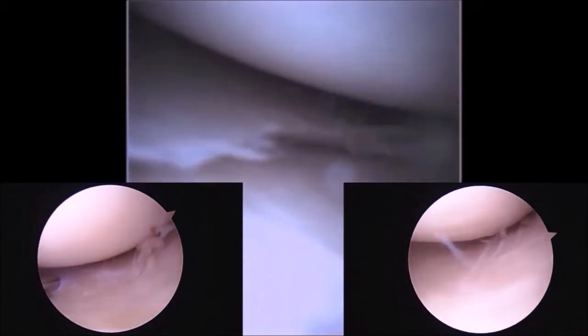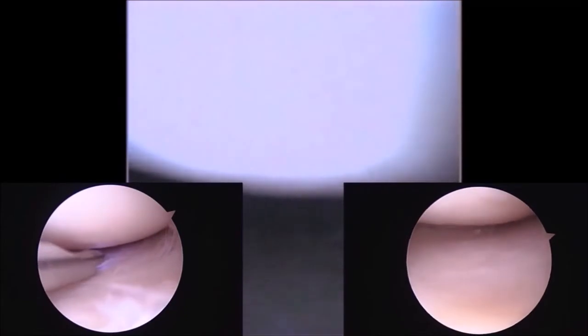We then switch to the medial compartment. In the bottom left inset, we can see the MyEye under direct visualization with a traditional arthroscope working the medial compartment.